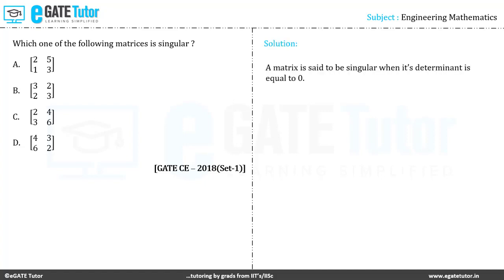A matrix is said to be singular when its determinant is equal to 0. So we need to check the determinant of all the matrices given in the options.